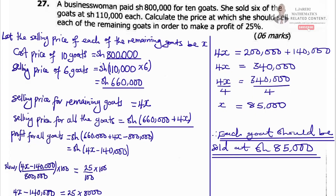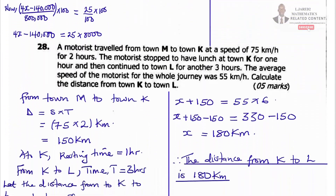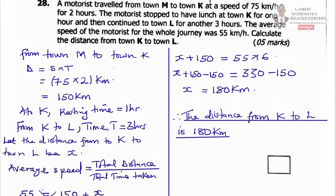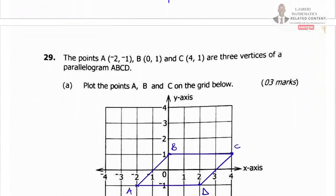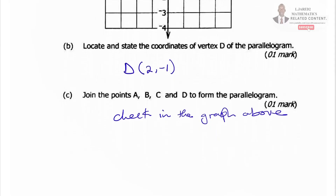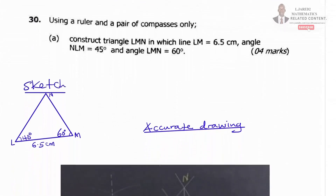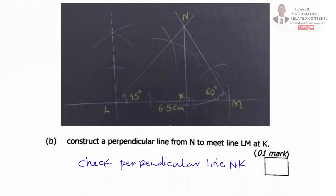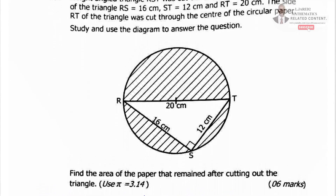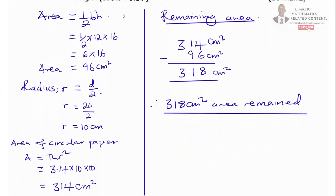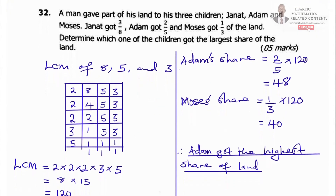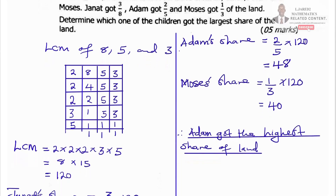Number 27 is here. And then the last number, that's number 32, is here.